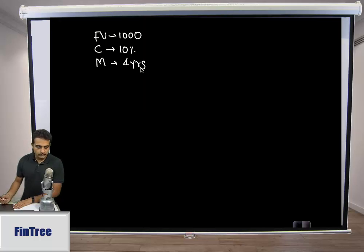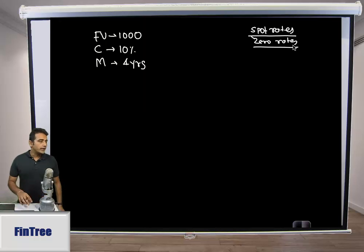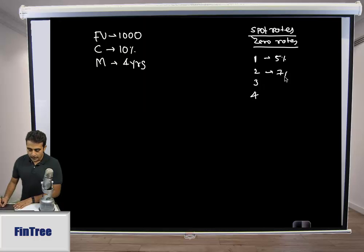Let's say we have a bond with a face value of 1000, coupon rate of 10%, maturity of 4 years. We have some data available, mostly on spot rates. Spot rates are also referred to as zero rates - we call them zero rates because they're the same as YTM on a zero coupon bond. So we have spot rates for year 1, 2, 3, and 4: 5%, 7%, 12%, and 15%.